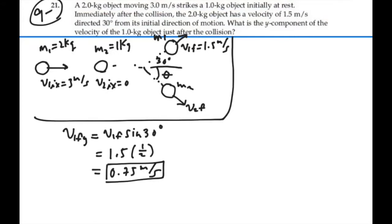Here's our one equation to rule them all in the y direction only. m1 v1 initial in the y direction plus m2 v2 initial in the y direction equals m1 v1 final in the y direction plus m2 v2 final in the y direction.